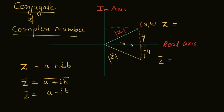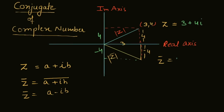Let's see an example. Here we have the real axis showing 3 and the imaginary axis showing 4 and minus 4. So the complex number is 3 plus 4 iota, and the conjugate of this complex number is 3 minus 4 iota.